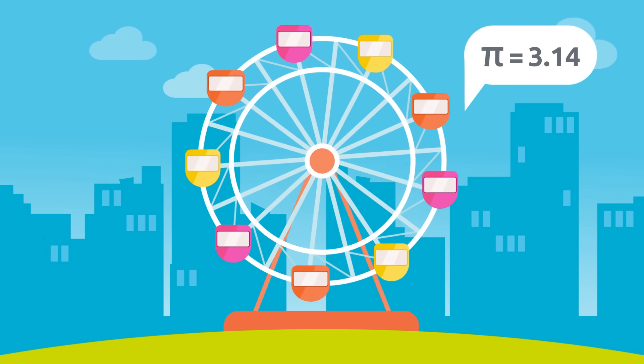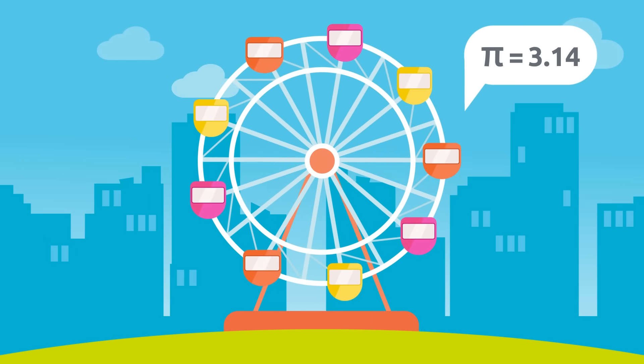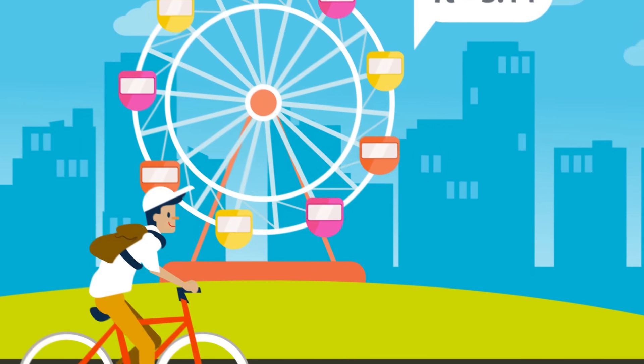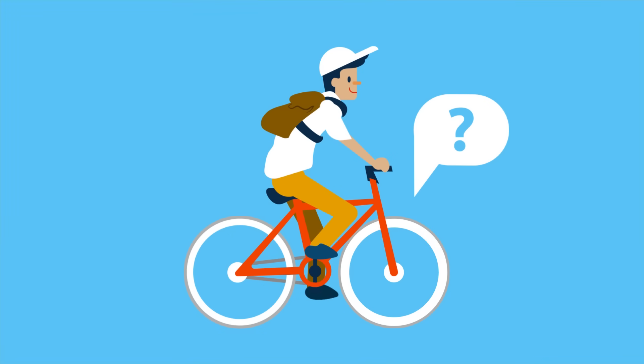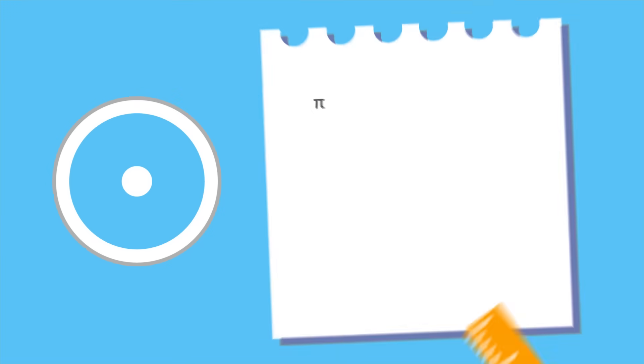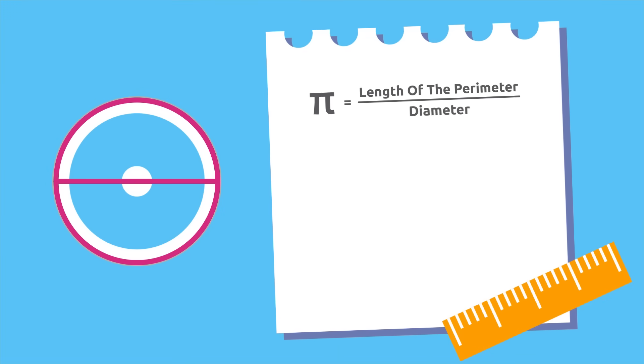Would you like to check that? It's very simple. Look for a measuring tape and measure the perimeter of a round object you have at home, for example the wheel of this bike. Divide the length of the perimeter by its diameter and the result you'll get will be 3.14.